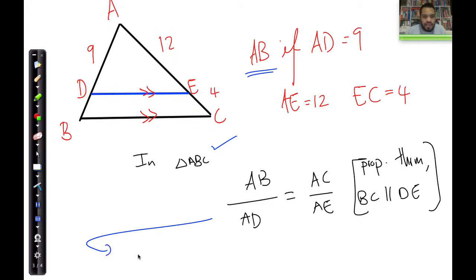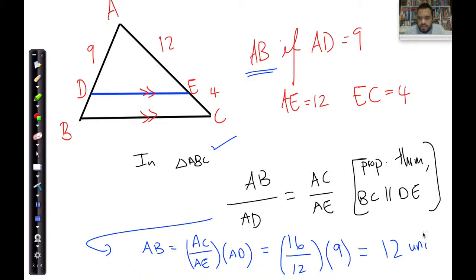We're interested in finding AB. So now I can say that AB is equal to AC divided by AE multiplied by AD. And let's see, what do I get? AC is going to be 12 plus 4, which is going to be 16. And AE is going to be 12. And AD is going to be 9. So 16 over 12 simplifies to 4 over 3, and 9 divided by 3 is 3, and 3 times 4 is going to be 12. So that AB is 12 units. That tells me that that entire piece there is 12 units, so that piece over there must be 3 units. Well done.